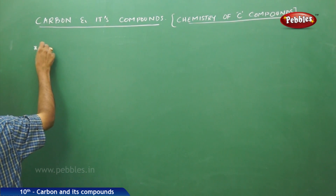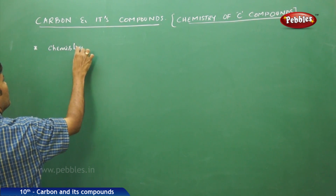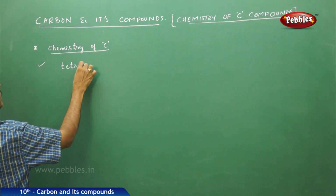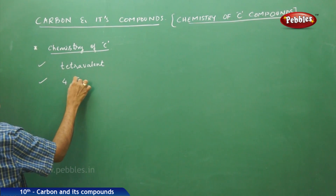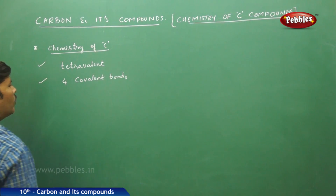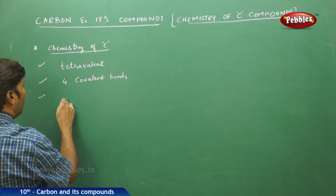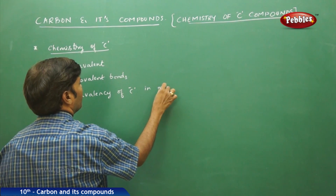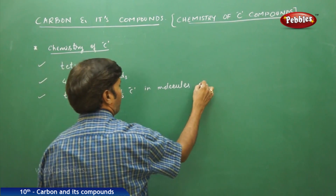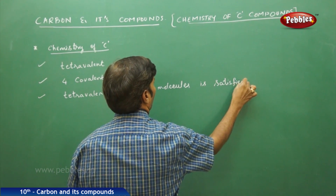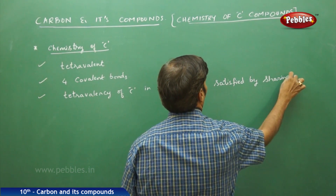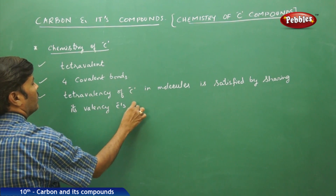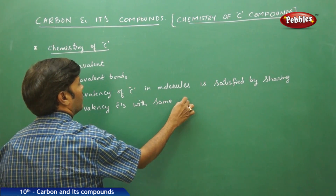Carbon as an element — the chemistry of carbon — carbon is always tetravalent. It is made up of four covalent bonds. To satisfy the tetravalency of carbon in a molecule, it is satisfied by sharing its valence electrons with the same or different atoms.